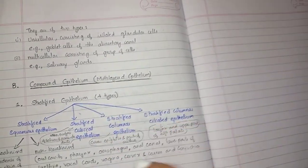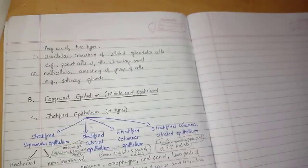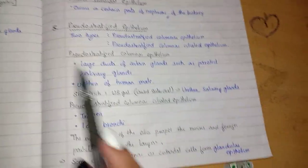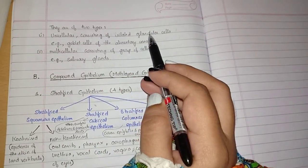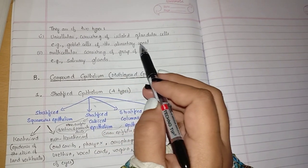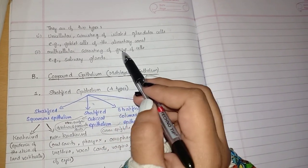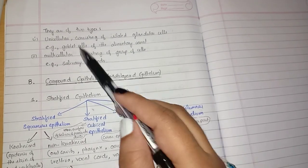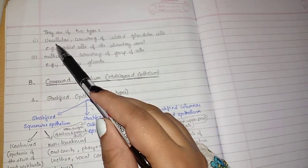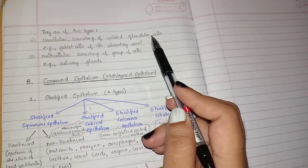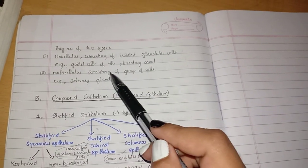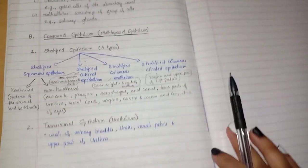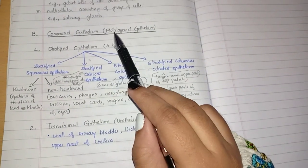Glandular epithelium is of two types: unicellular, consisting of isolated glandular cells — example, goblet cells of the alimentary canal; and multicellular, consisting of groups of cells — example, salivary glands.